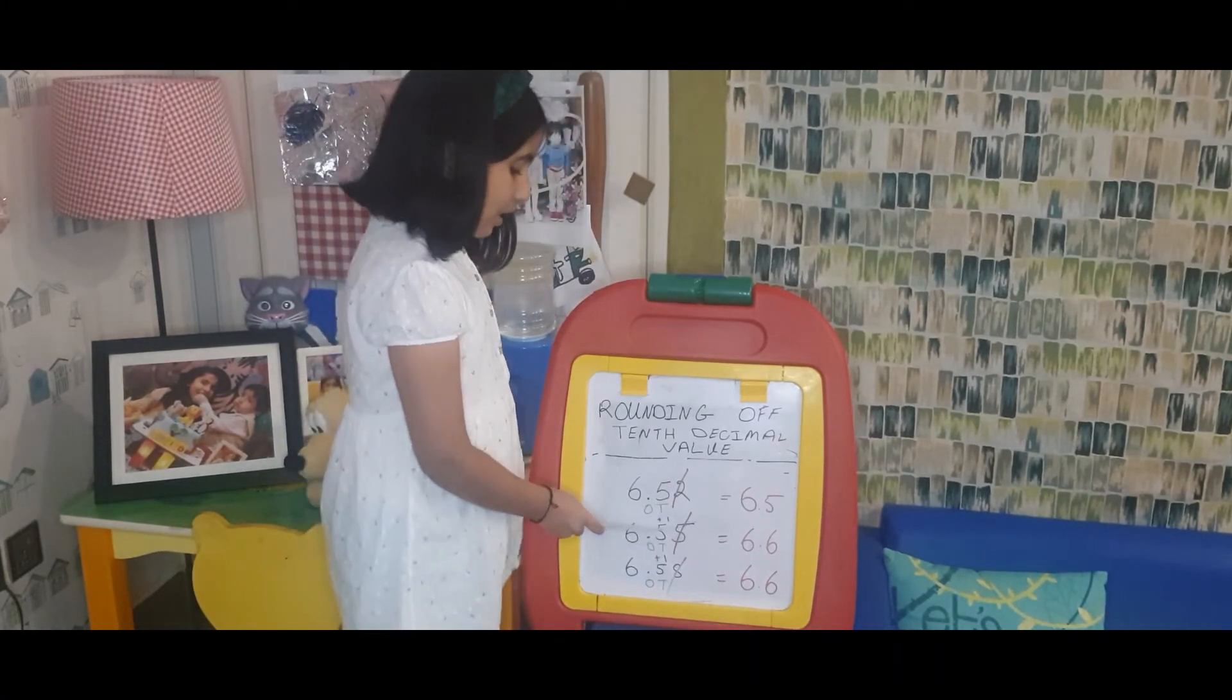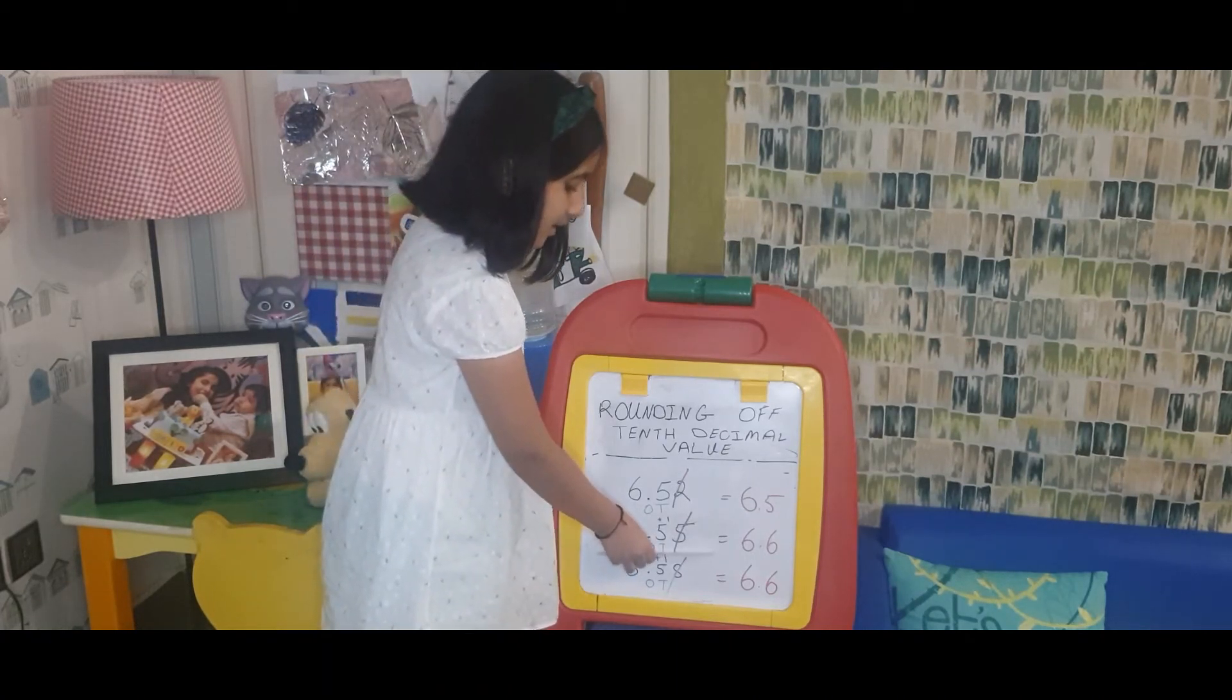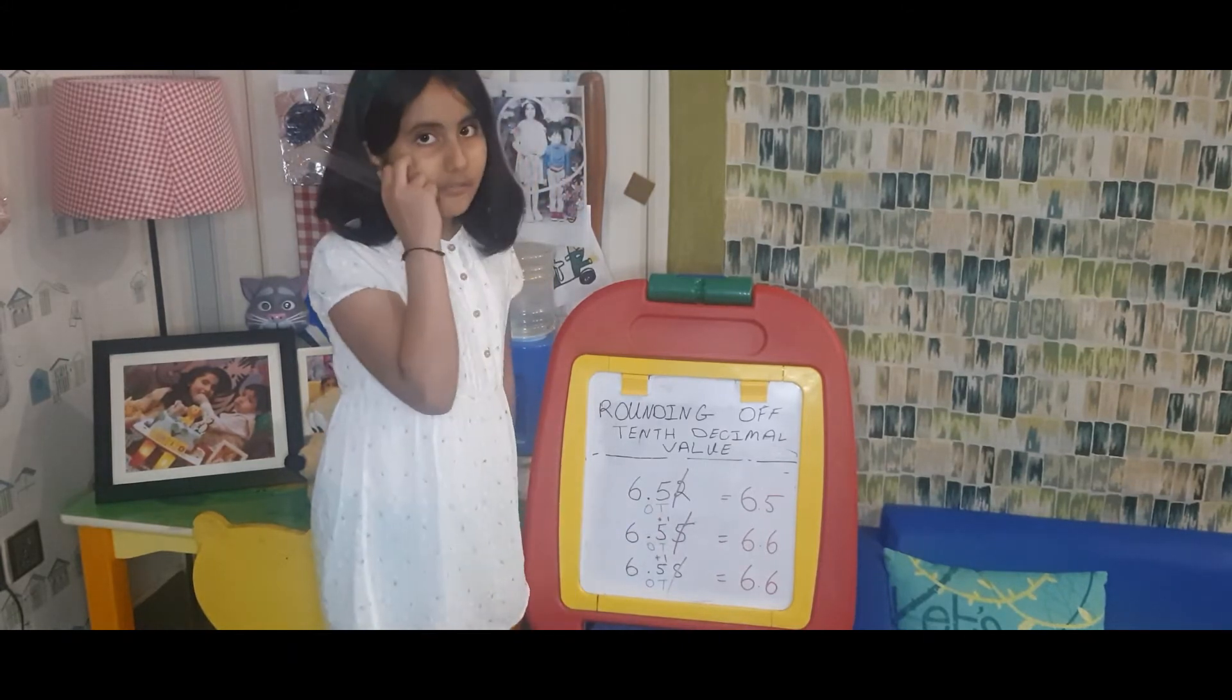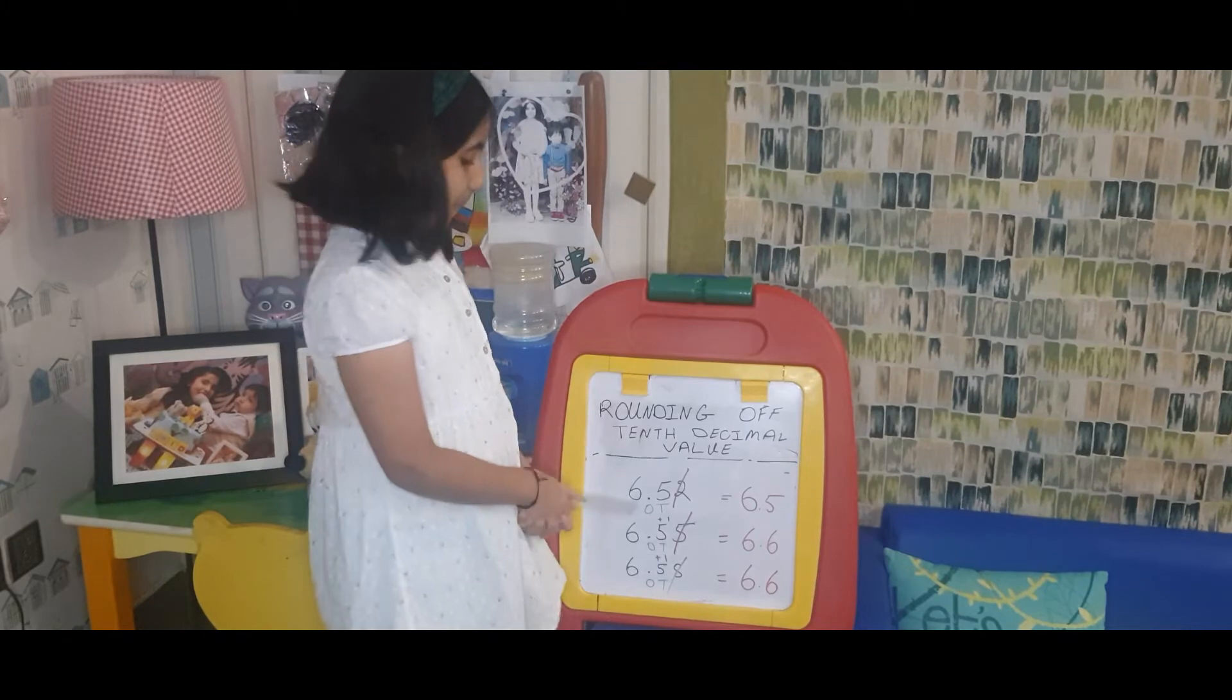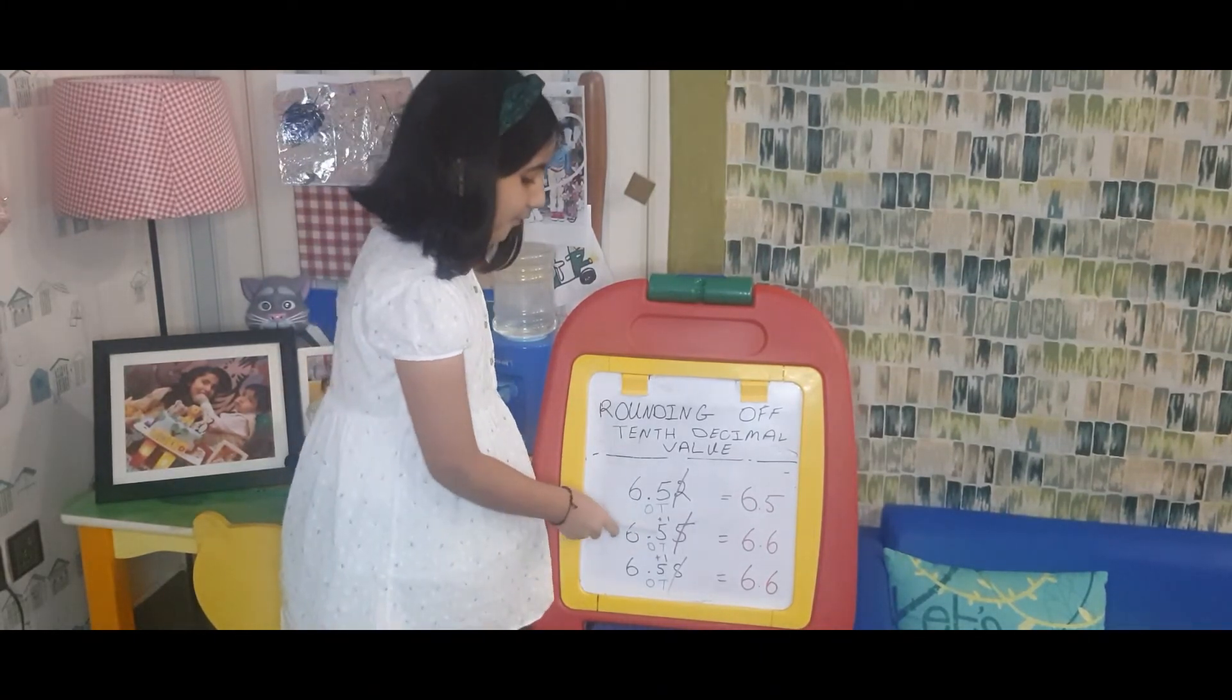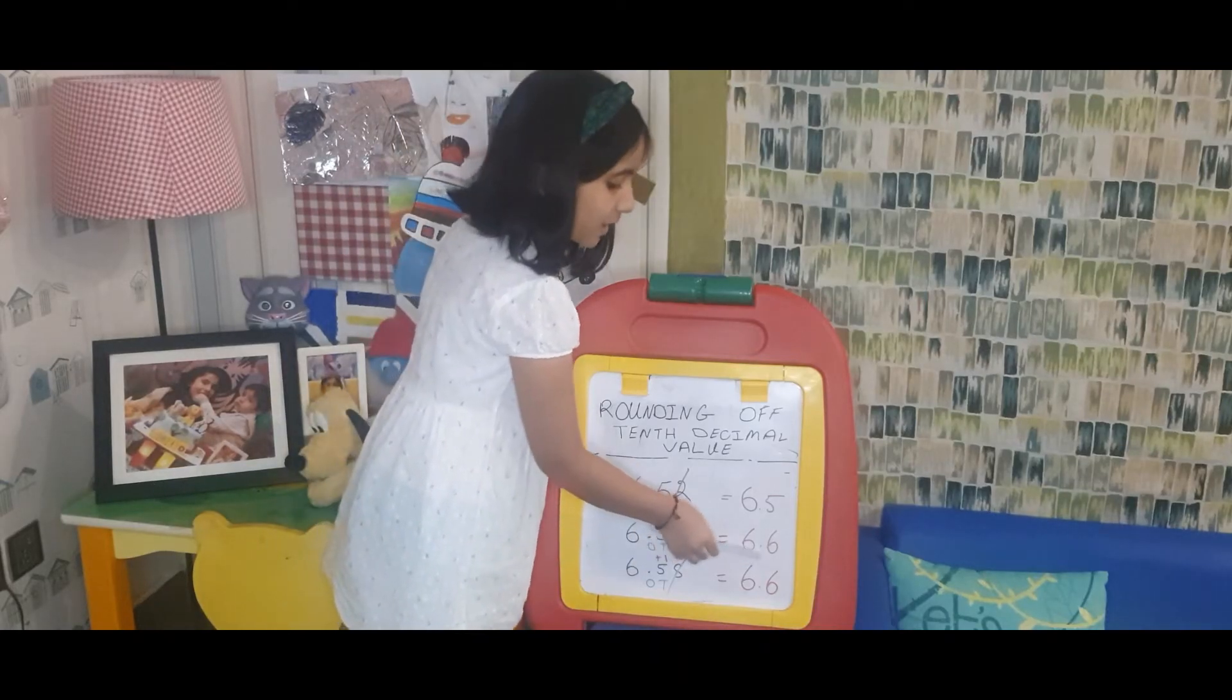We have found the tenth decimal value of this number, which is 5. The other 5 is left. We will see if it is equal to 5, more than 5, or less than 5. It is equal to 5, so we will delete it, but before deleting it we will add one to this 5, and it will become 6. Our answer will be 6.6.